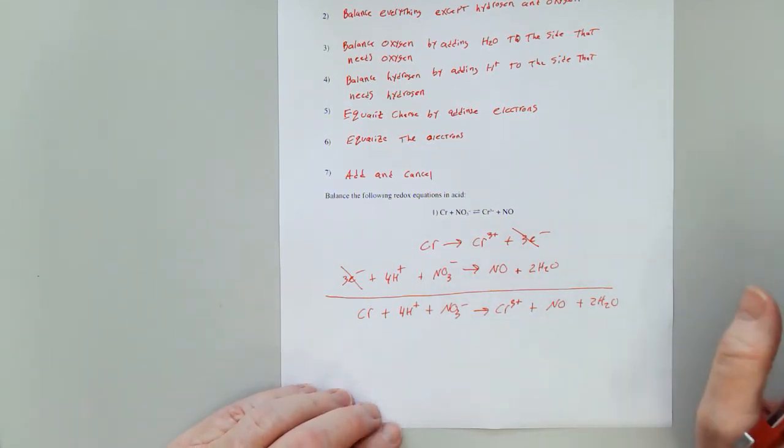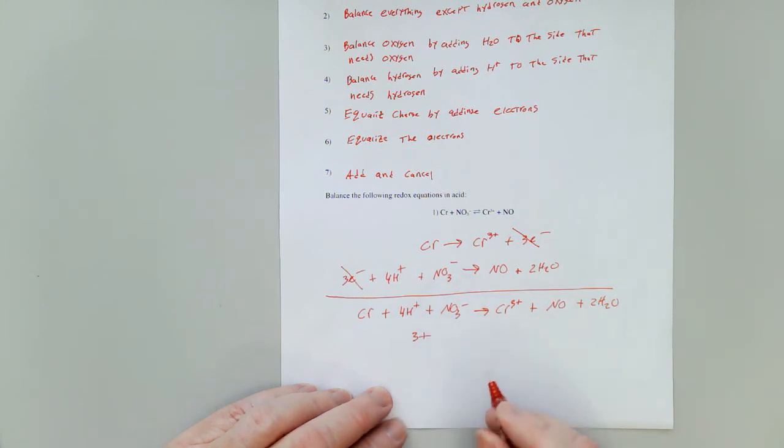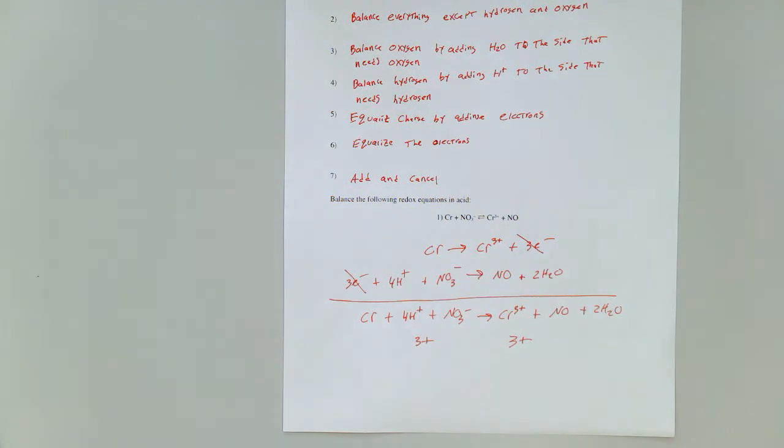Now, kind of a simple little way to check to see if you're on the right track. Look at the total charge. Four plus and one minus is three plus. The other side is three plus. And if those charges are the same on both sides, you've probably balanced it correctly.